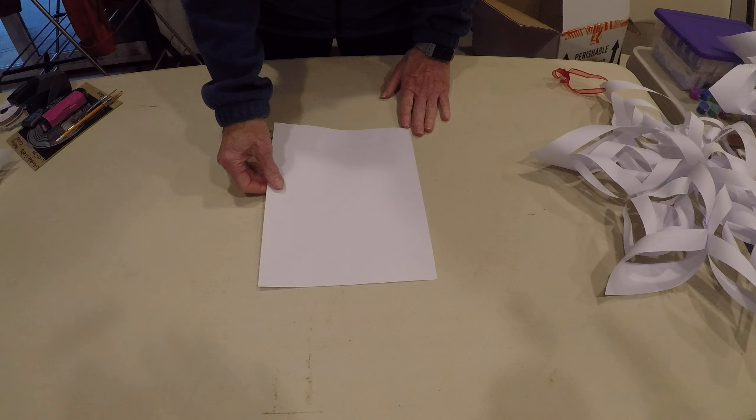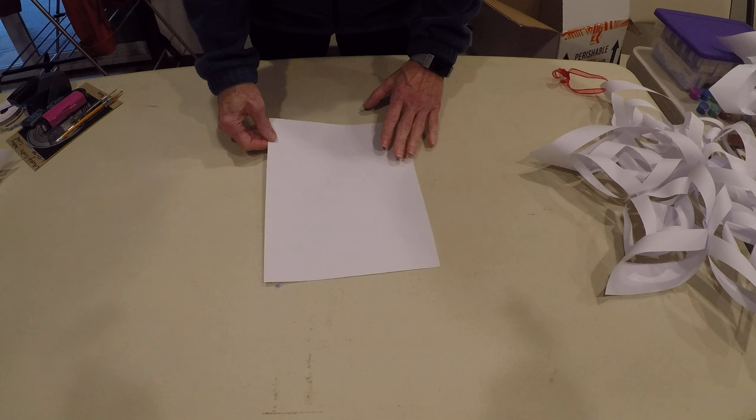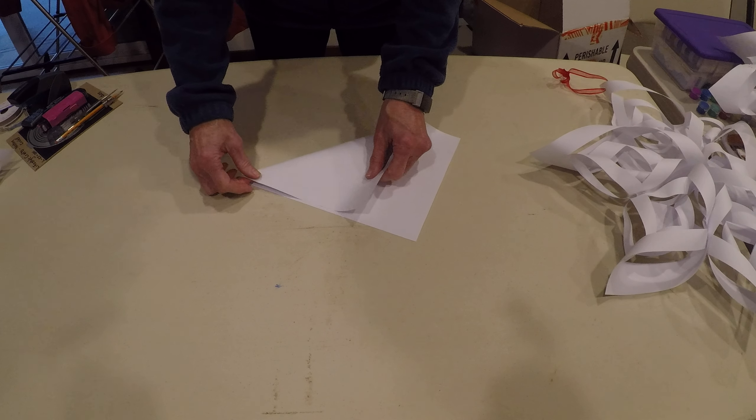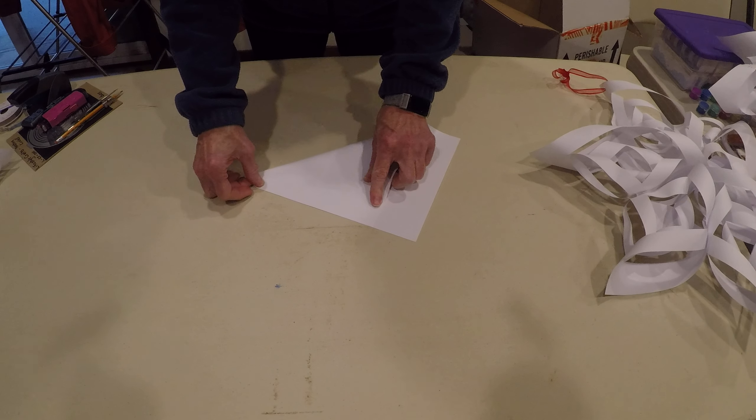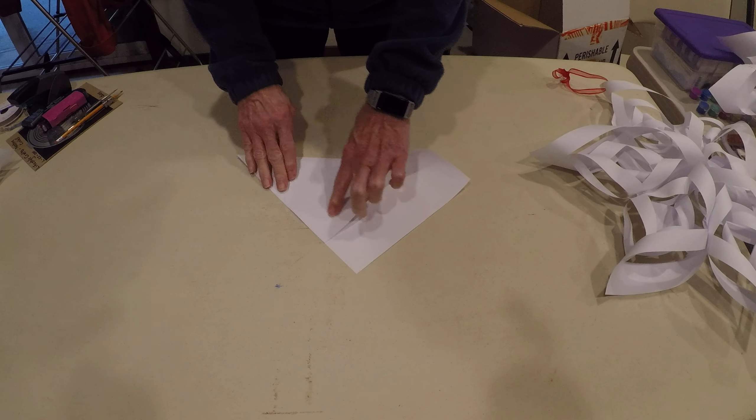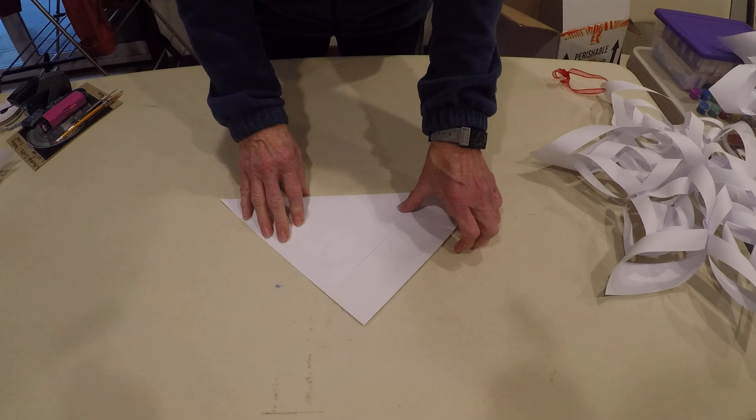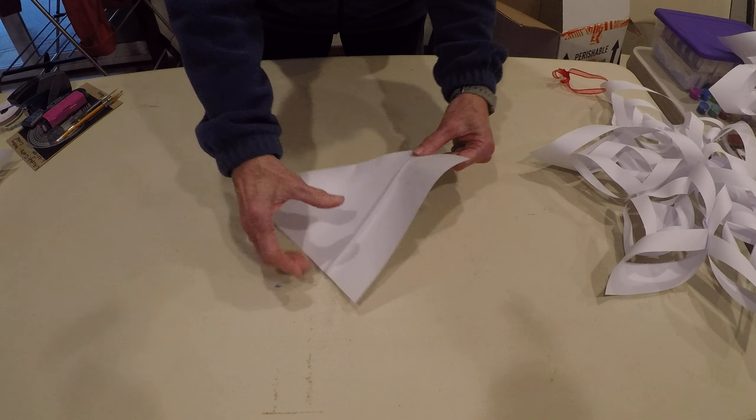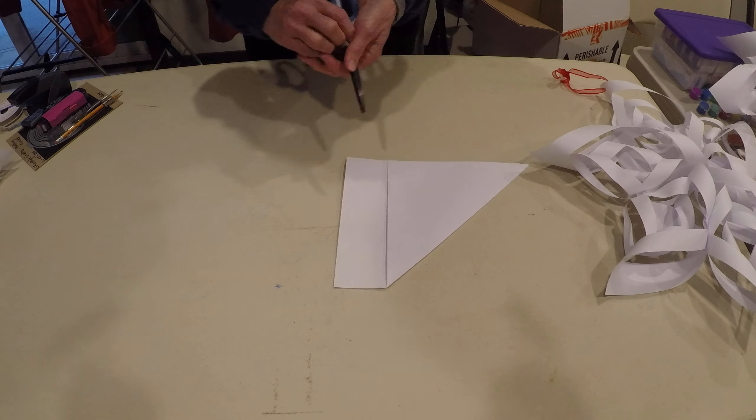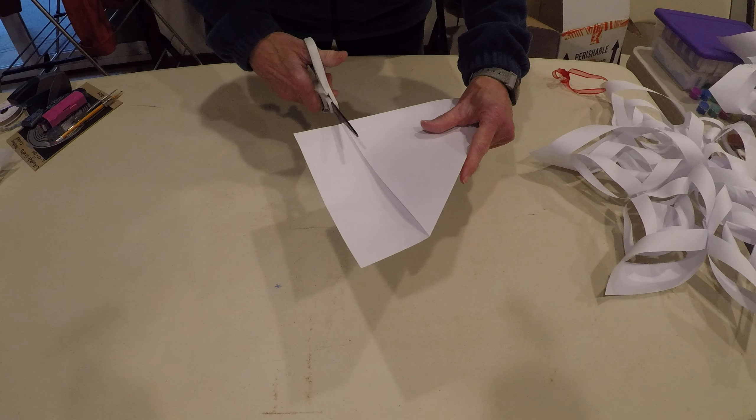The first step is to take a piece of copy paper and make it into a square. To do that, you just fold it over diagonally, and then we're going to cut this extra tab off. We'll just use a pair of scissors to cut that off.